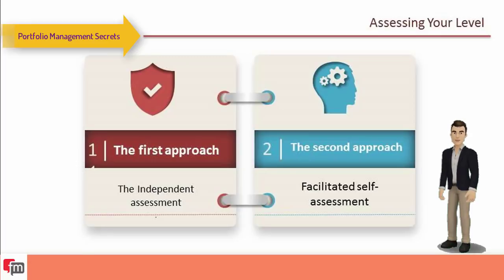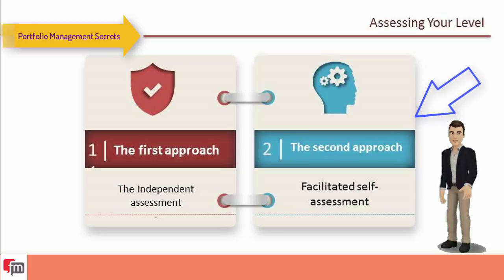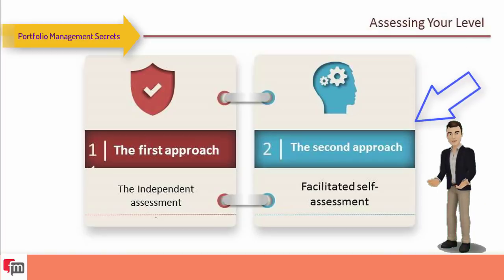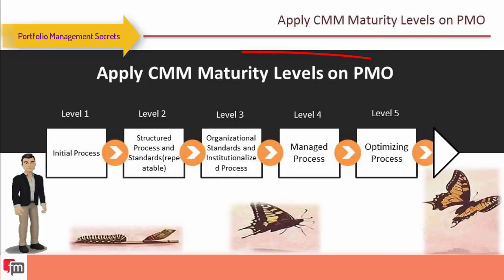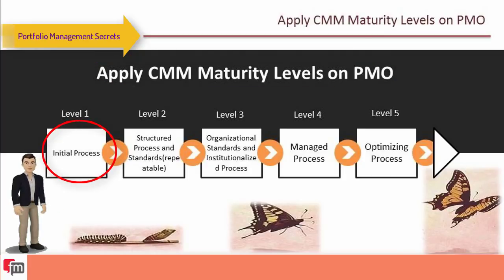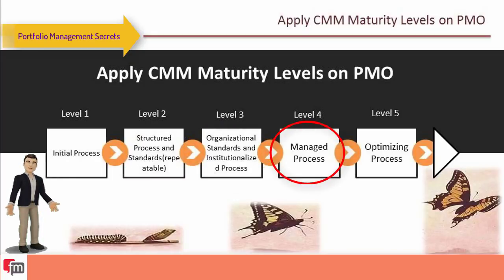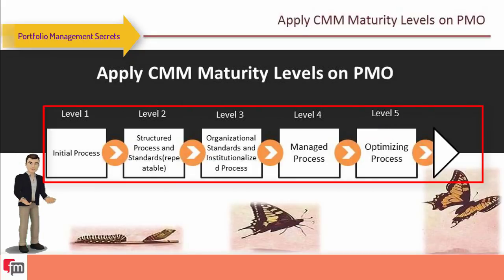The second approach is a facilitated self-assessment, where a small team of experienced assessors works with representatives from your staff to conduct a self-assessment, following the same procedures as an independent assessment. Applying CMM maturity levels to the PMO produces five levels: initial process, structured process and standards, organizational standards, managed process, and optimizing process — representing complete maturity.